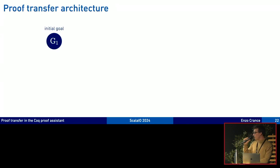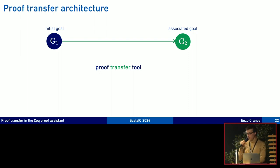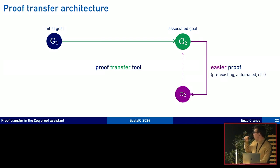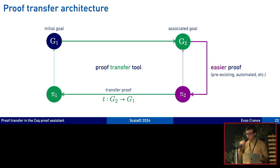The proof transfer problem is the following. We have our proof for the NAT encoding and we would like to have the same proof on the N encoding but we don't have a way to actually go from one proof to the other to change the encoding. Proof reuse is just wishful thinking. We need some proof transfer tool. We'll take our initial goal G1 expressed with the N encoding. The proof transfer tool will generate an associated goal G2 which is exactly the goal, the same but written in the NAT encoding. Then we do our easier proof. In this case it's a pre-existing proof. Once we have the proof of G2, the proof transfer tool provides us a transfer proof allowing to go back to a proof of G1.